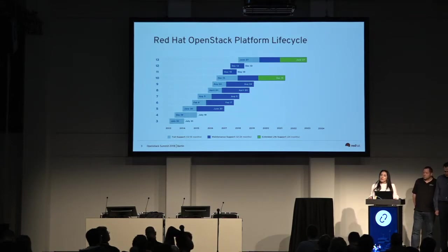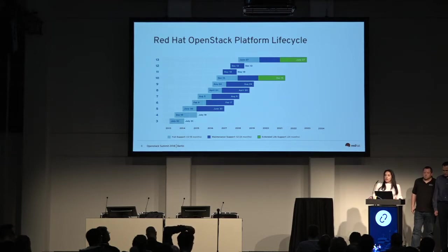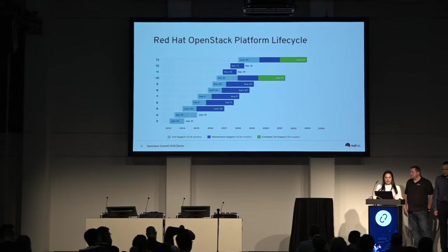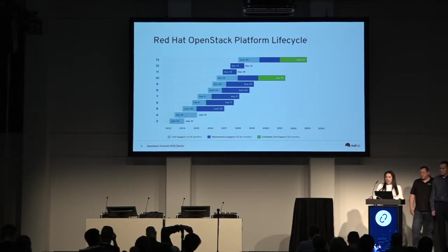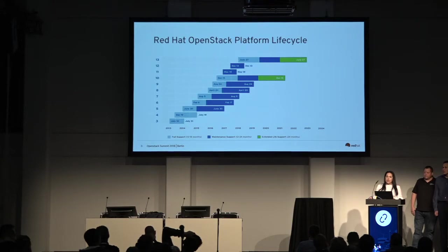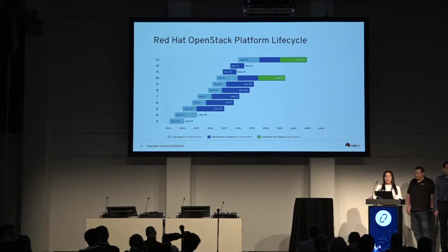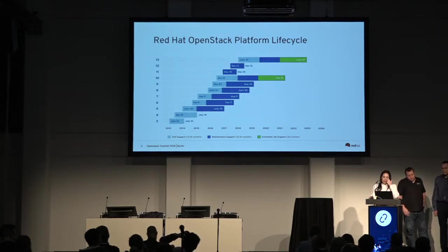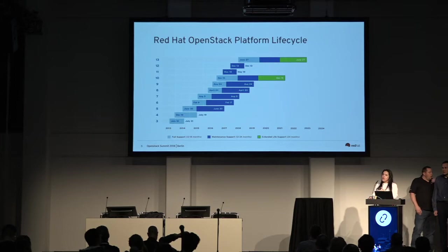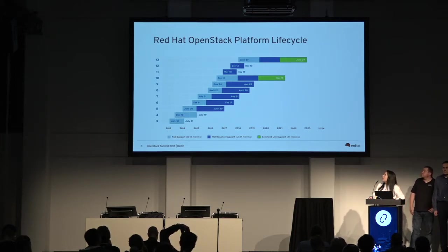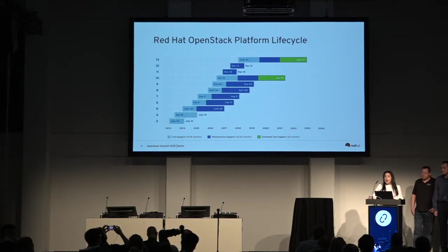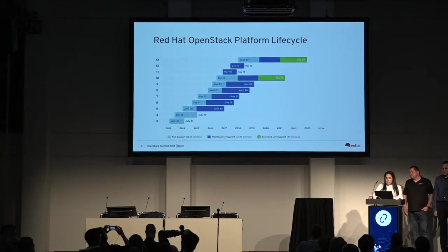We started working on this fast forward procedure back in the Ocata cycle with proof of concepts and conversations with the community. Of course, we didn't know what Queens was going to look like back then, but we knew there was going to be a lot of disruption and changes in how we delivered OpenStack. Back in the Ocata cycle, there was no talk of containers — some projects like Kolla started to come up, but we hadn't broadly adopted that. We knew that was coming and needed to find a solution to help customers already staying in the version 10 long life release get to version 13 based on Queens.